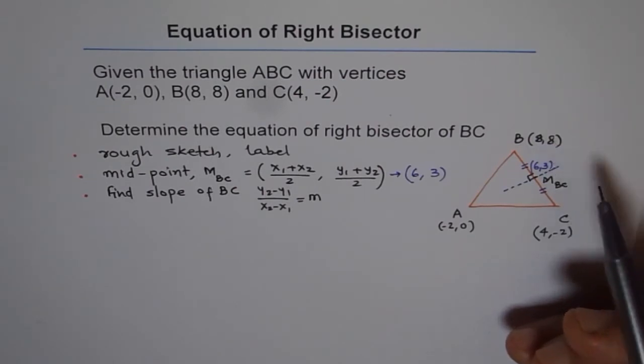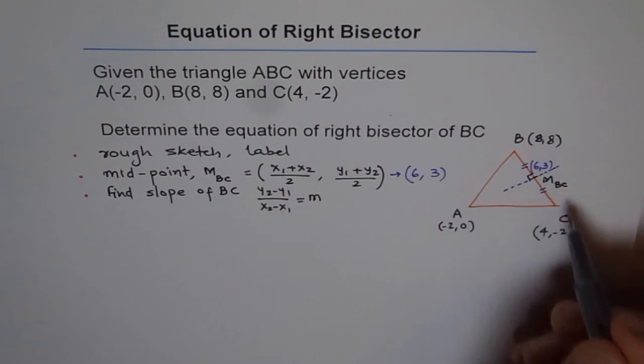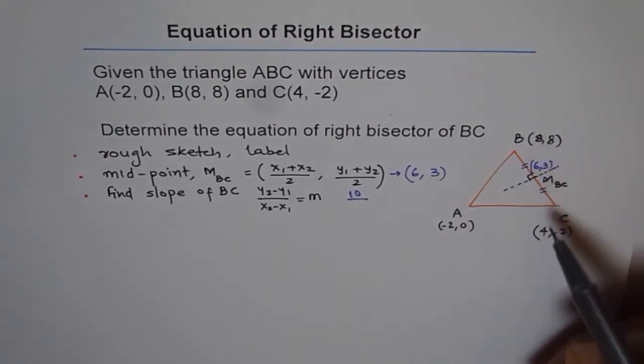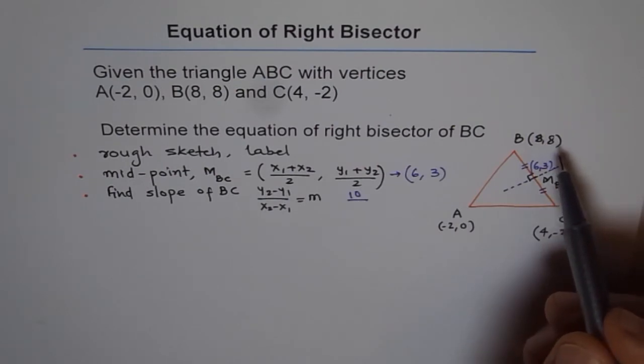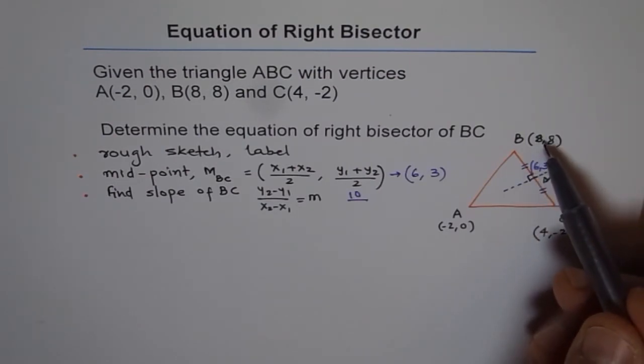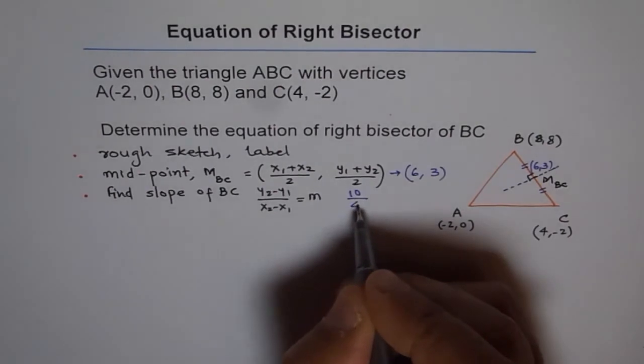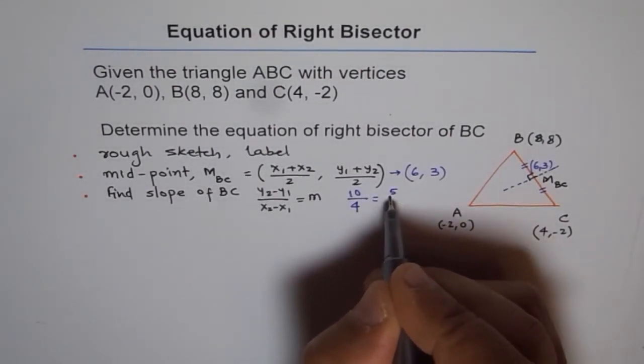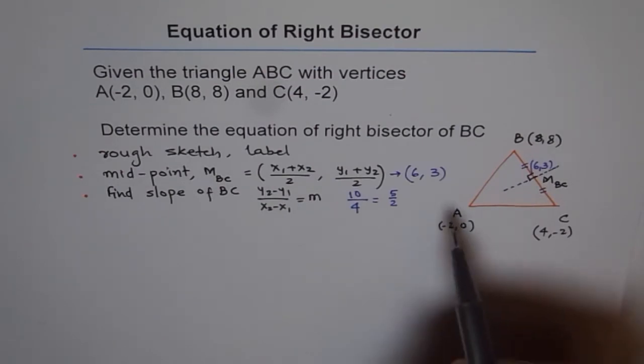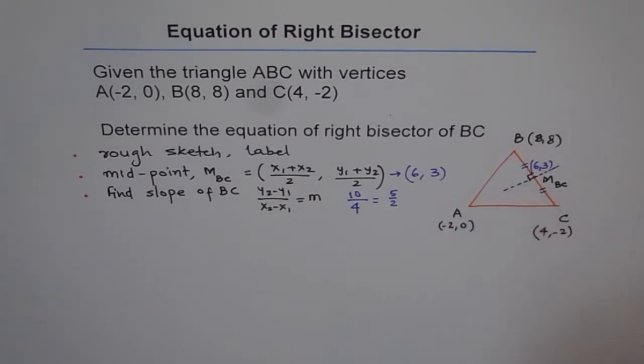So y2 minus y1 divided by x2 minus x1 is the slope. So what is y2 for us? It is 8. So 8 minus -2. 8 minus -2 will be 10. So the slope is 10 divided by x is 8 minus 4. 8 minus 4 will be 4. So y2 minus y1 is 8 minus -2 which is 10. And x2 minus x1 is 8 minus 4 which is 4. And when you divide 10 by 4, you get 5 over 2. So that is the slope of this line. 5 over 2. It doesn't look like, it looks like negative slope. But don't get confused about it because it is just a rough sketch.